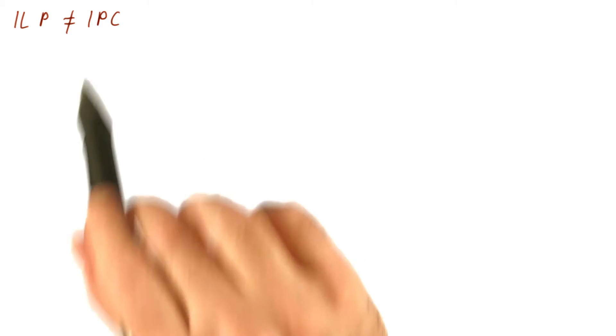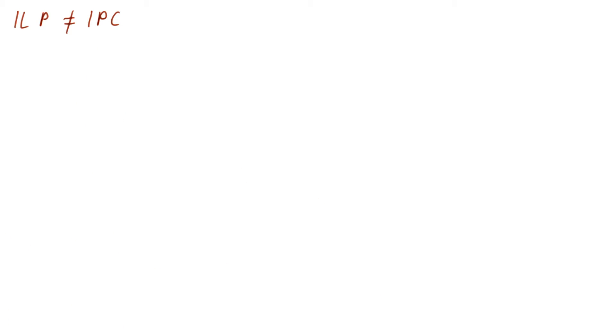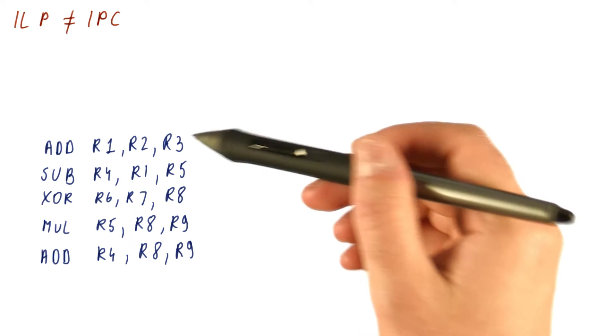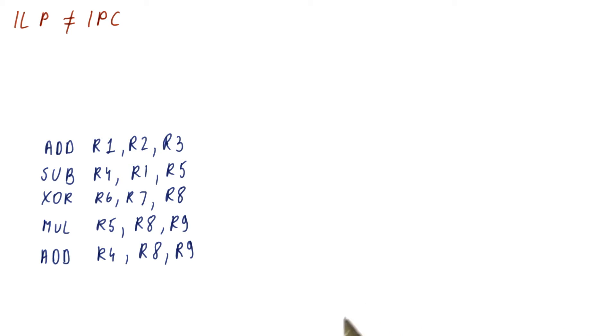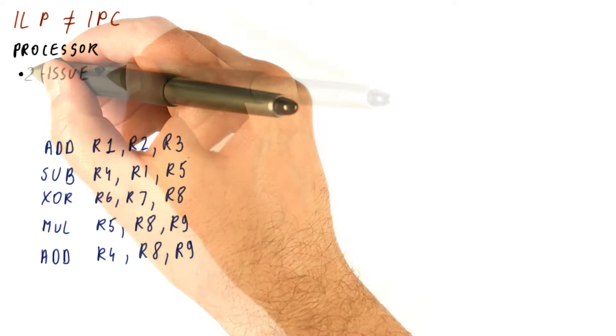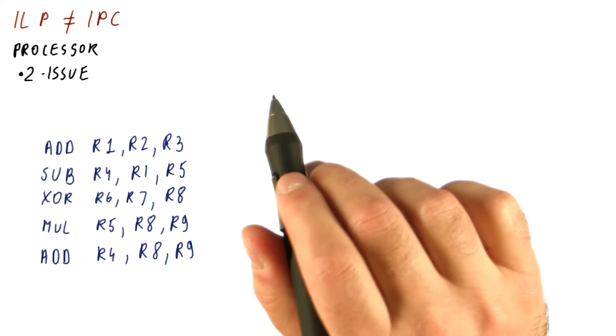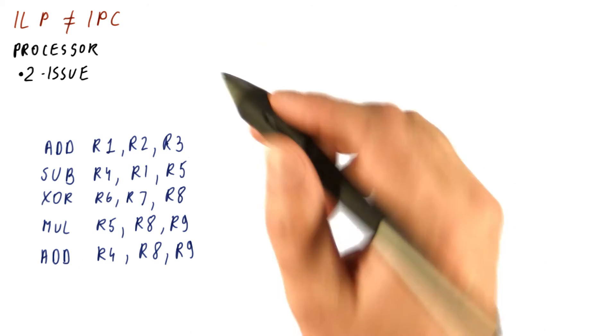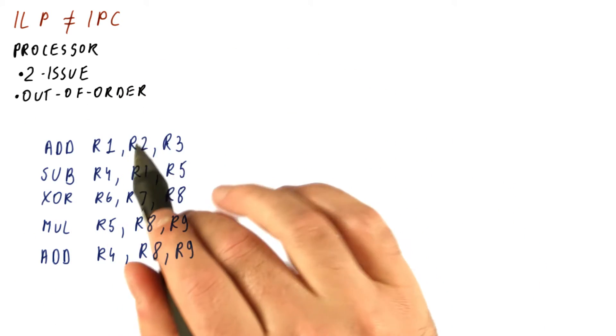So now, let's look at an example of a program and a real processor and see how do we determine ILP and how do we determine the IPC. This is our program, and now let's look at what the processor looks like. Our processor is two issue, meaning it can handle two instructions per cycle. Out of order superscalar, which means that it doesn't need to execute instructions exactly in program order.